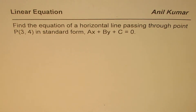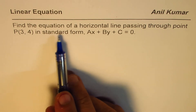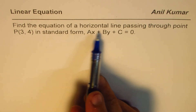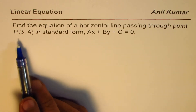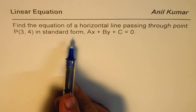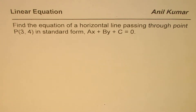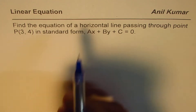I'm Anil Kumar sharing with you a very interesting question on linear equations. The question is: find the equation of a horizontal line passing through the point P(3,4) in standard form ax plus by plus c equals zero. You can pause the video, answer the question, and then look into my suggestions.